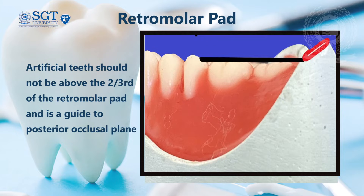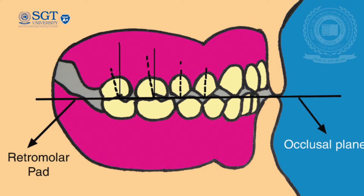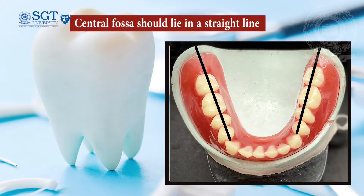The plane of occlusion of teeth arrangement should not be above the two-third of the retromolar pad area. The maxillary lingual or palatal cusp should be centralized over the midline, or the central fossa of the mandibular teeth should be on the center of the ridge and in a straight line. This ensures denture stability and reduces the fulcruming force during function.